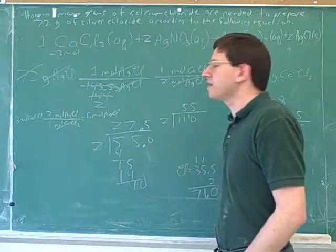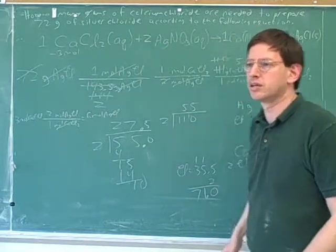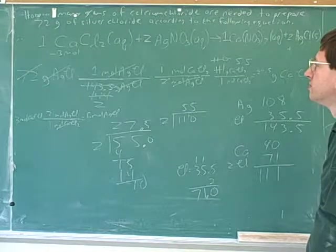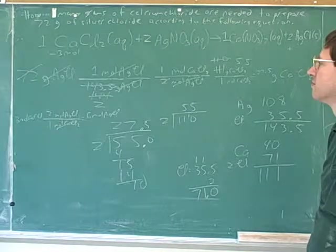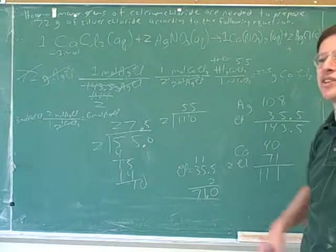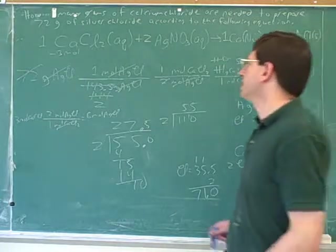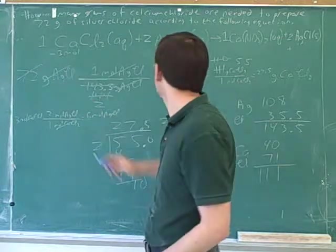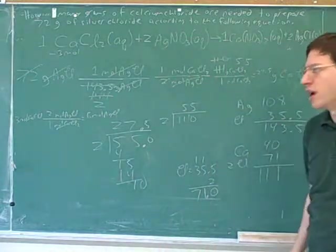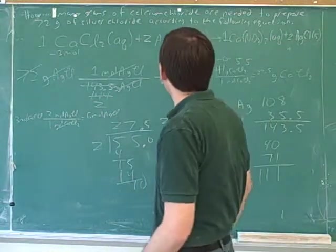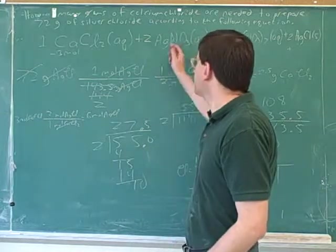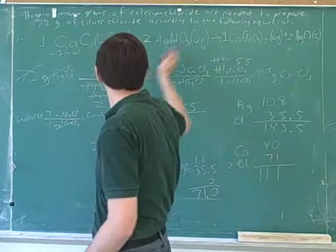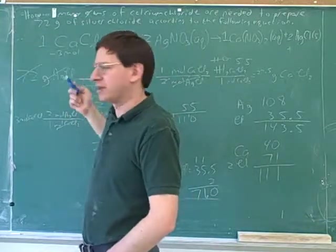A student asks: wouldn't we have to take silver nitrate into consideration when answering a question like that? That's a good point, and the answer is no. After all, we didn't take silver nitrate into consideration when we did this question — we went straight from silver chloride to calcium chloride. It was implied in the problem that there is enough silver nitrate to react with all of the calcium chloride. As long as there's enough to react, it doesn't really matter what's happening to that reagent.